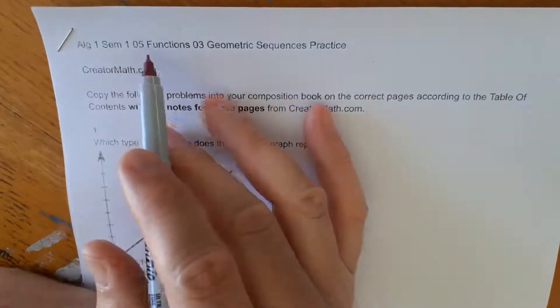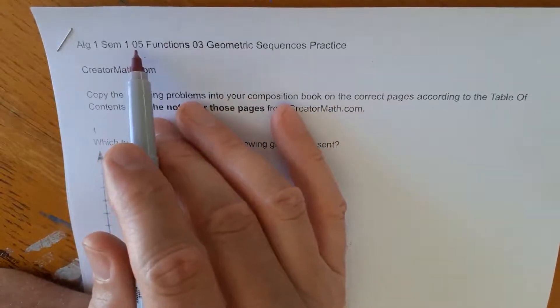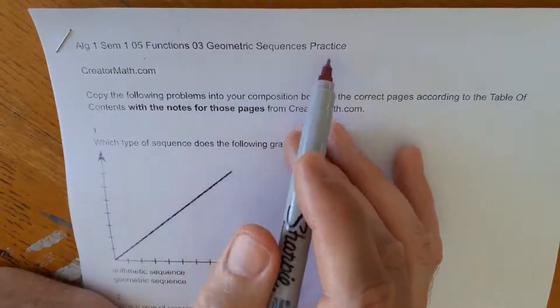So this is Algebra 1, semester 1. It's a unit called Functions, number 5. It's the third unit called Geometric Sequences Practice.